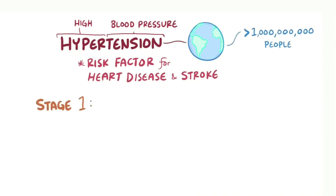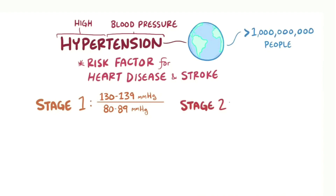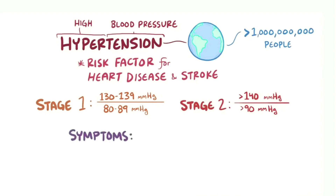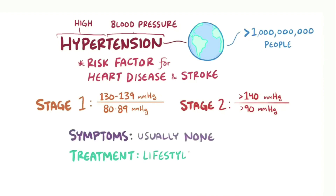Stage one hypertension is defined as 130–139 mmHg systolic and 80–89 mmHg diastolic, while stage two hypertension is defined as greater than 140 mmHg systolic and greater than 90 mmHg diastolic. Hypertension usually doesn't cause any symptoms, and the first line of treatment is lifestyle changes.